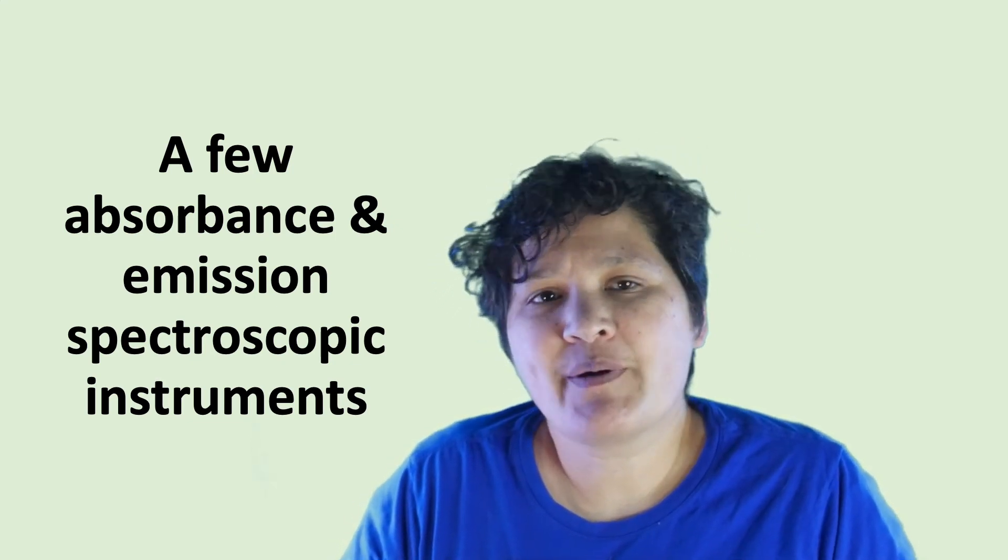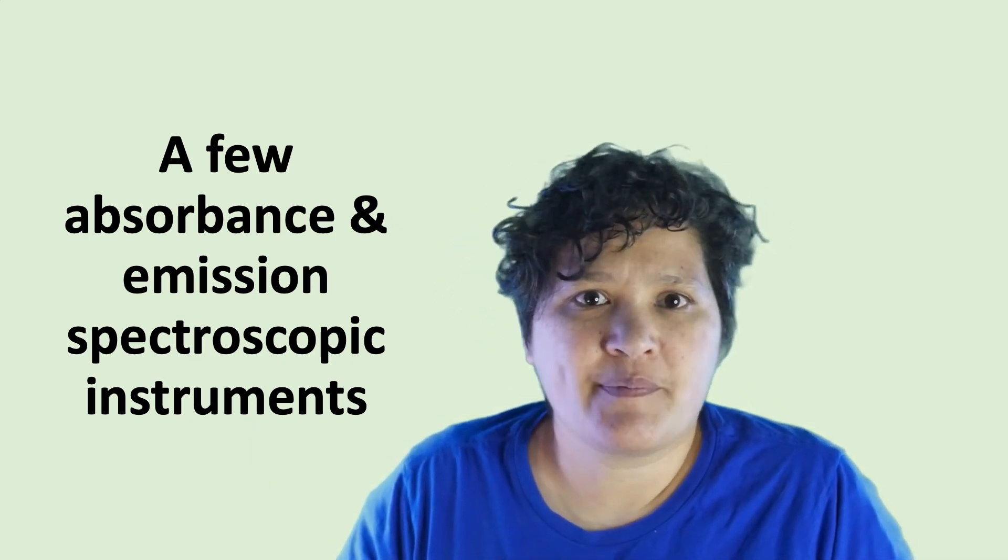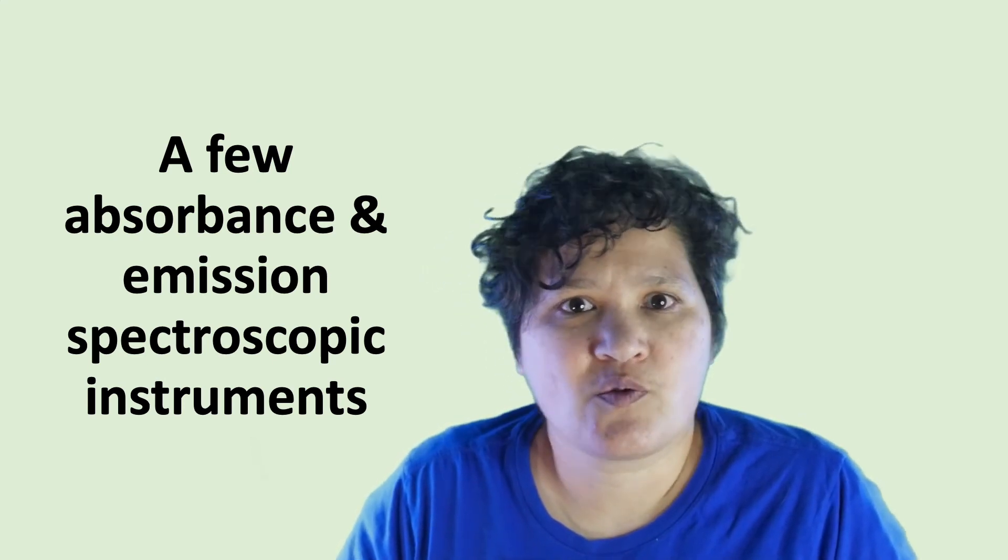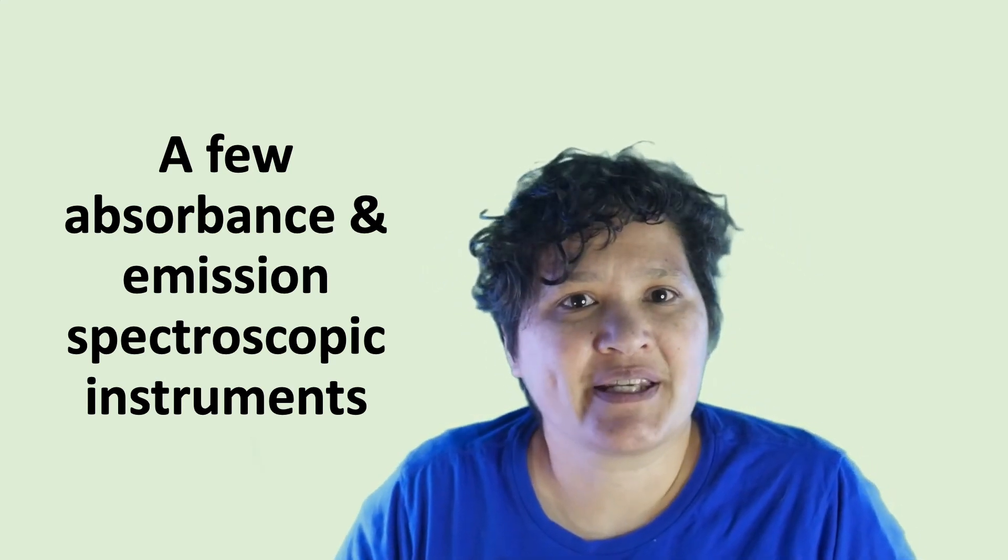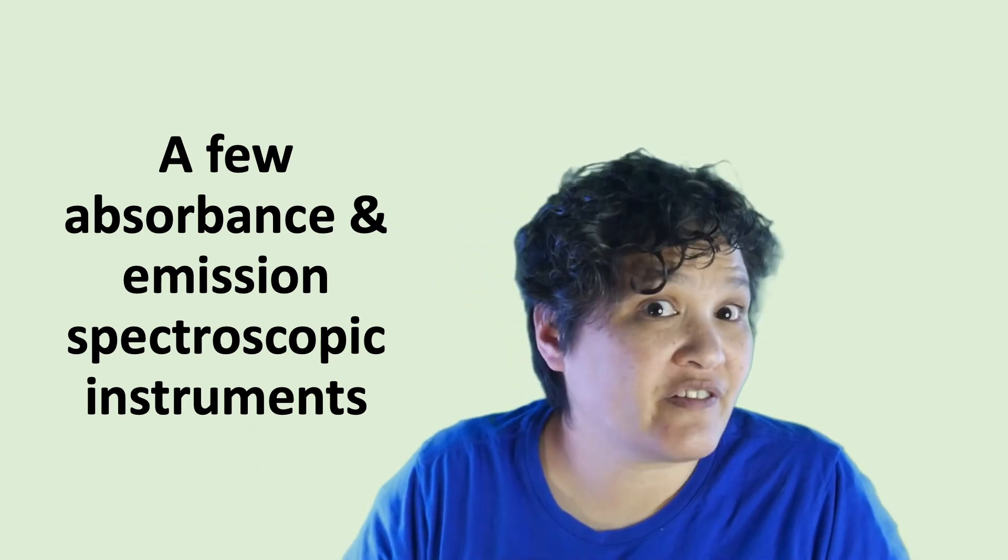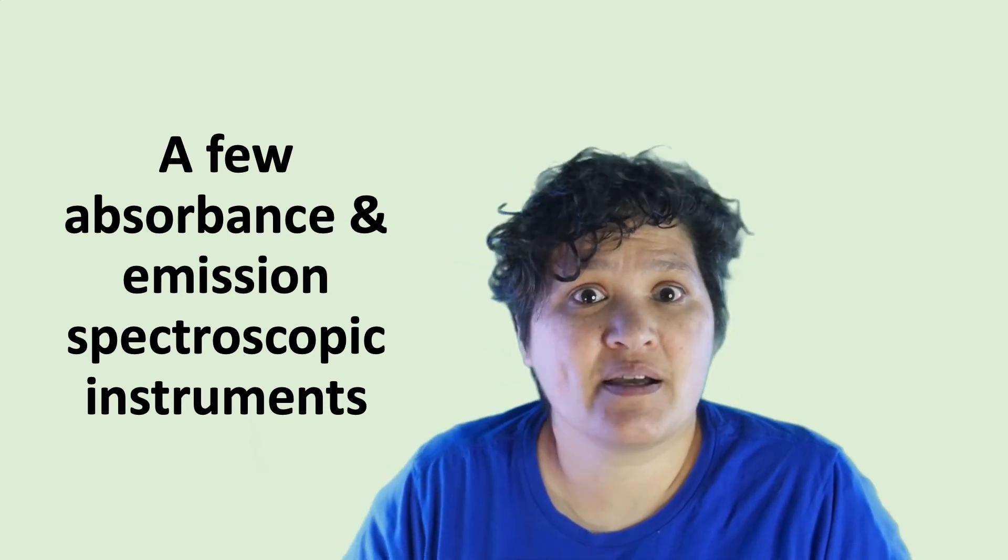So in class, we talked through how a UV-vis spectrometer is set up. Now we're going to talk about two different spectroscopic instruments, one absorbance, one emission, both of which are designed for atomic analysis, that is, quantifying the elemental composition of a sample.